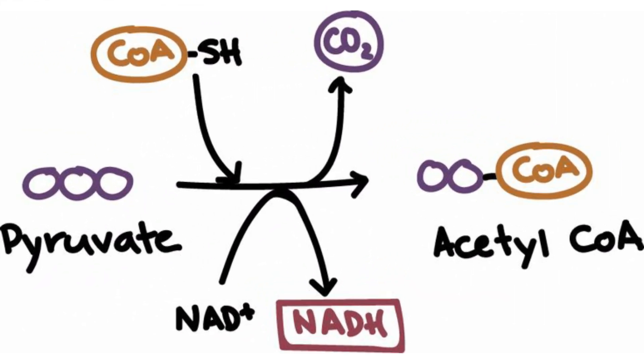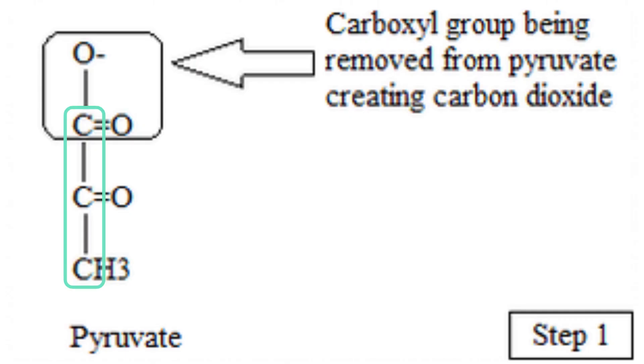So we ended glycolysis with two pyruvate molecules. In pyruvate oxidation, we are going to take these two molecules and create two different molecules called acetyl-CoA, which are then going to be the reactants that we use in the Krebs cycle. Pyruvate is a three-carbon molecule, whereas acetyl-CoA is a two-carbon molecule. So to start the process, a carboxyl group, which has a carbon in it, is removed from the pyruvate. This step releases a carbon dioxide molecule.